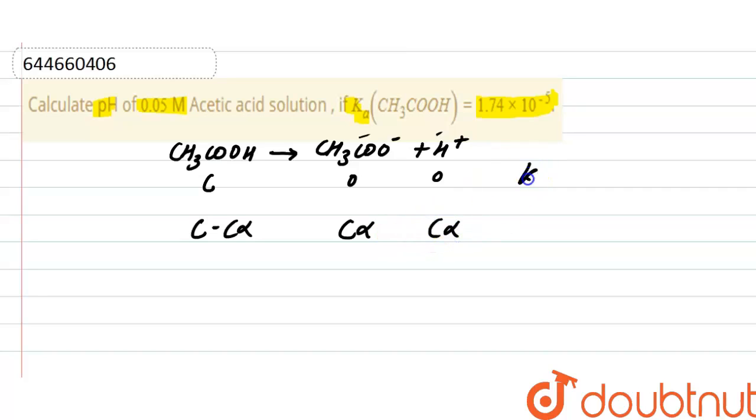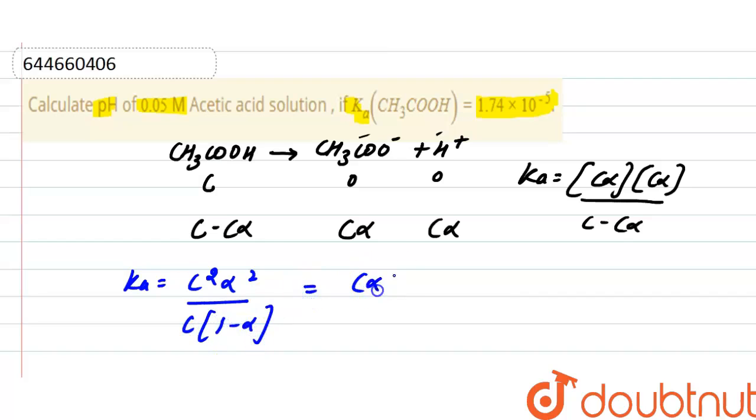The acid dissociation constant Ka equals concentration of products divided by concentration of reactants. We can write Ka = C²α² / C(1-α) = Cα² / (1-α). We will neglect alpha in the denominator, so Ka = Cα².